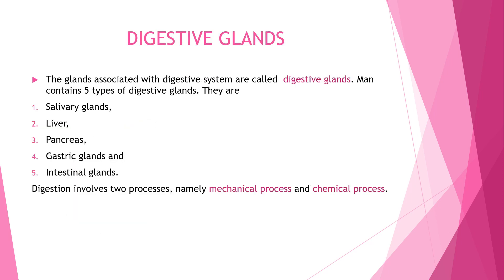The glands associated with the digestive system are called digestive glands. Man contains five types of digestive glands: salivary gland, liver, pancreas, gastric gland, and intestinal gland. Digestion involves two processes, namely the mechanical process and the chemical process.